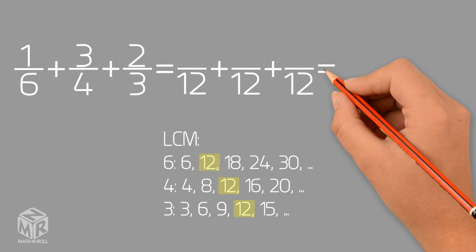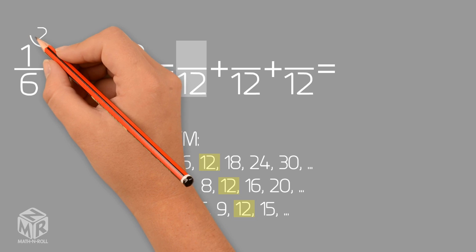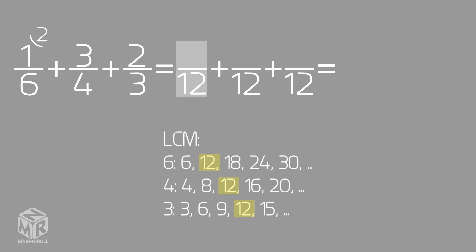Now we find the equivalent fractions with a denominator of 12. To find the equivalent fraction of 1 sixth, we multiply both parts of the fraction — the numerator and the denominator — by 2. This gives us 2 over 12.